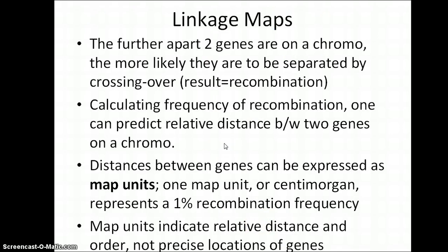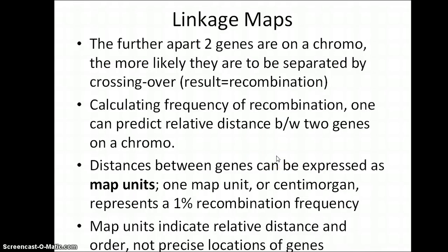Linkage maps allow us to get a sense of the spatial relationships between genes on a chromosome by calculating this rate of recombination. If there is a high rate of recombination, we can assume that genes are very far apart from one another because they'll likely be exchanged during crossing over. If genes have a low rate of recombination, they're very likely close to one another on the chromosome. These distances are represented in map units, where one map unit represents a 1% change in the recombination frequency — so 10 map units means a 10% recombination frequency.